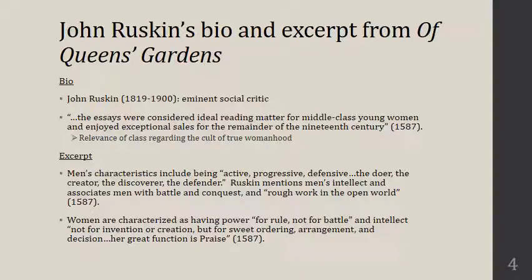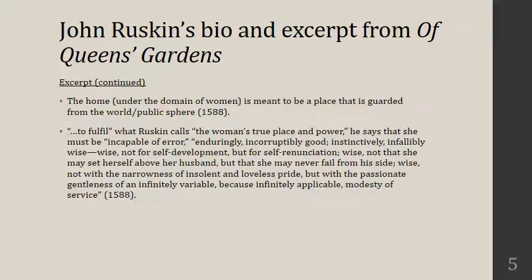He's also making a number of contrasts: men are fit for battle and conquest, women are not fit for battle. Women's intellect is mentioned, but in a very specific way. Ruskin builds on the separation of spheres by delineating men's and women's duties and talking about the home in particular — what that space is supposed to be. It's supposed to be guarded at all costs from the world and public sphere. He talks about how if the public sphere is allowed to come into the domestic sphere, it's no longer a home. The charge of maintaining the home is given to women. They are to fulfill what Ruskin calls the woman's true place in power. He says that the woman must be, quote, incapable of error, enduringly incorruptibly good, instinctively infallibly wise — wise not for self-development, but for self-renunciation.